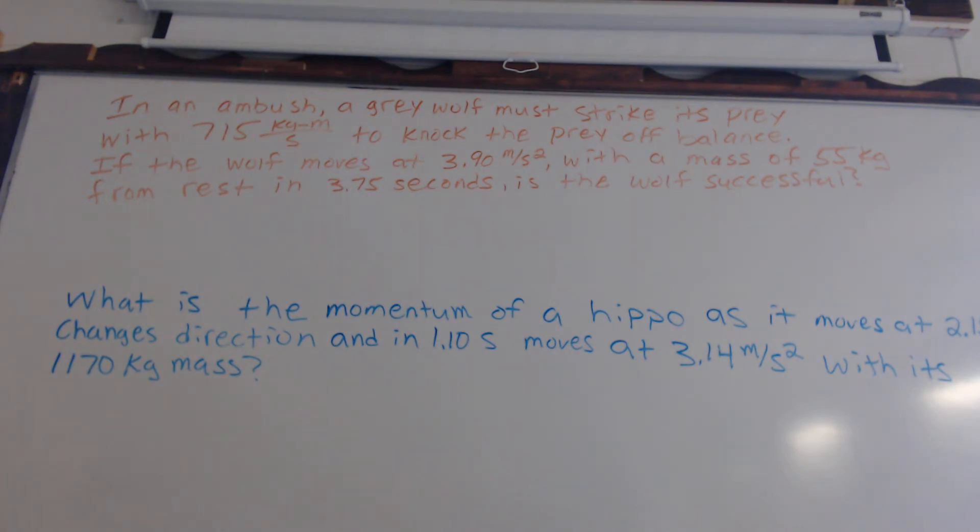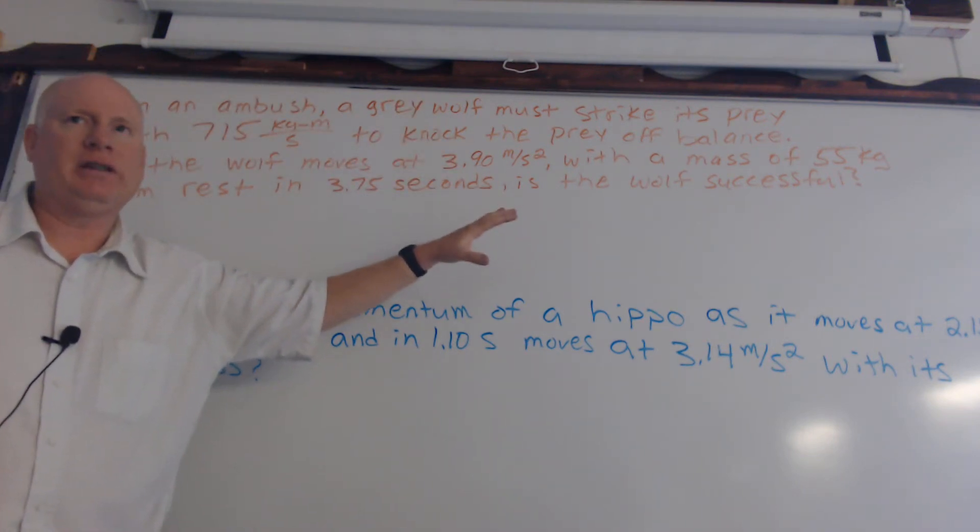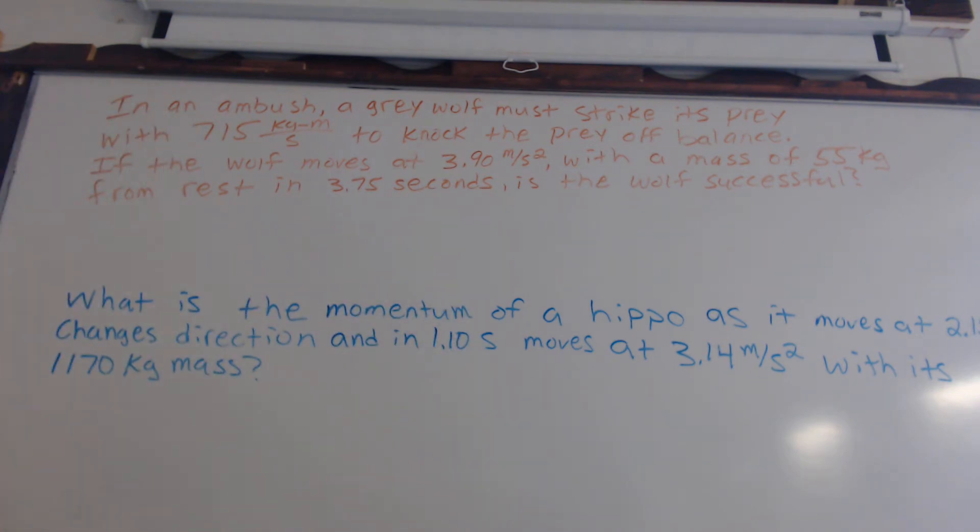Okay, so in this case it has to have this much momentum. We don't know what the momentum of that wolf is yet. We've got the variables for it, we just need to solve to see if this hunt is going to be successful. And then in the bottom problem, what is the momentum of a hippo as it moves at 2.15 meters per second, changes direction, and in 1.10 seconds moves at 3.14 meters per second squared with its 1,170 kilogram mass. So I'm just going to go ahead and hit pause now so you can go ahead and work on those problems.